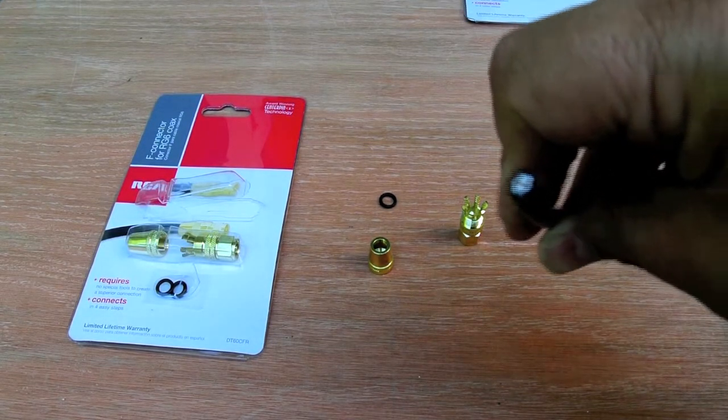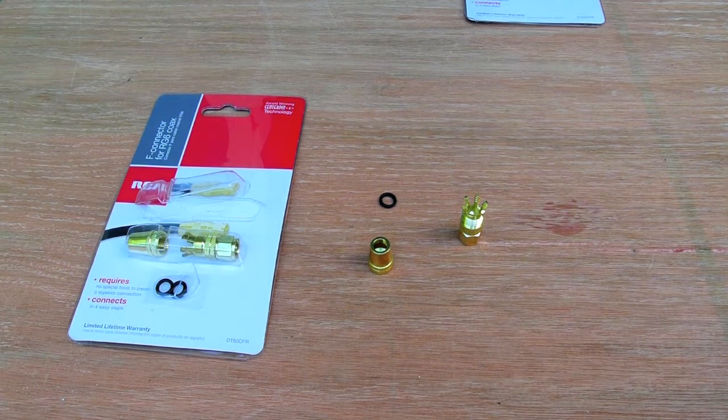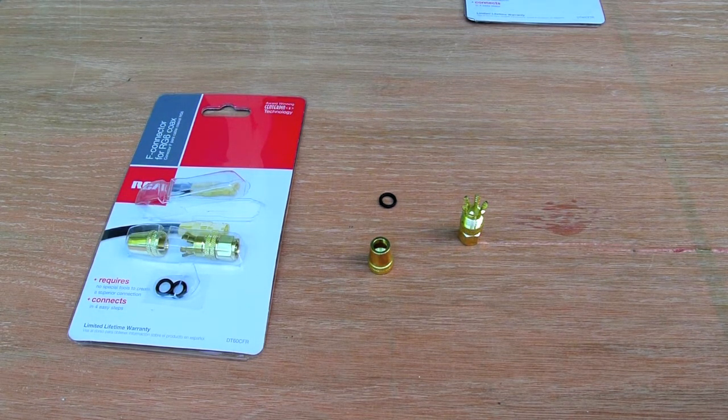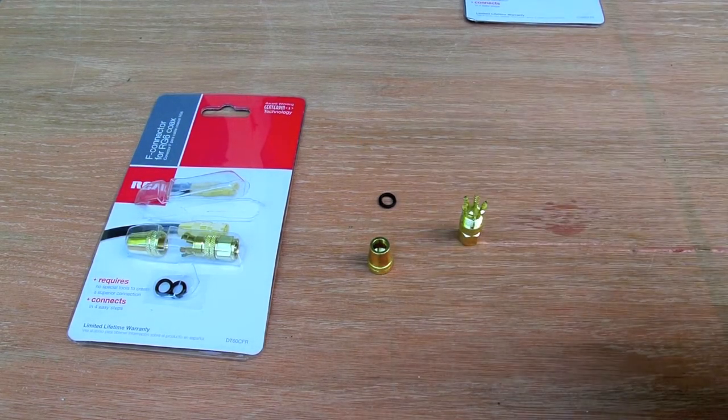What you have to do is where this is deformed a little bit, take a pair of pliers and just kind of round it a little bit to bring it back into shape like that.